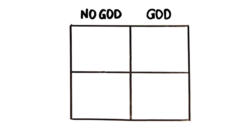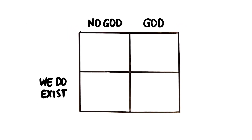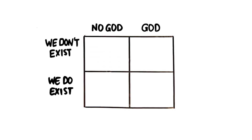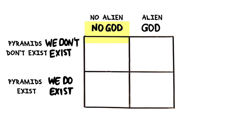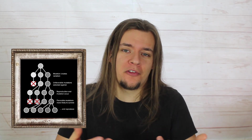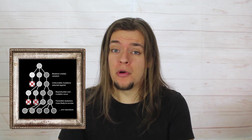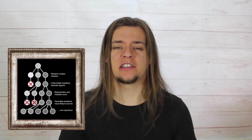Here we have a base box where we have our two possibilities of god existing and no god existing. On the other side, our possibilities are that humans exist or that humans don't exist. And here we have the equivalent: two possibilities of an alien existing and no alien existing, and on the other side, pyramids exist or pyramids don't exist. If no god is true, then most would agree that human existence takes a lot of specific factors to come about — except for the millions of religious people who don't believe in a god, and the billions of people who acknowledge evolution by natural selection: the non-random and unconscious process that is the very bedrock of biology.